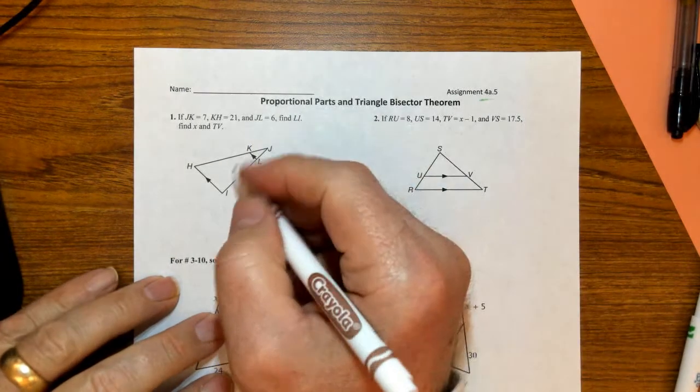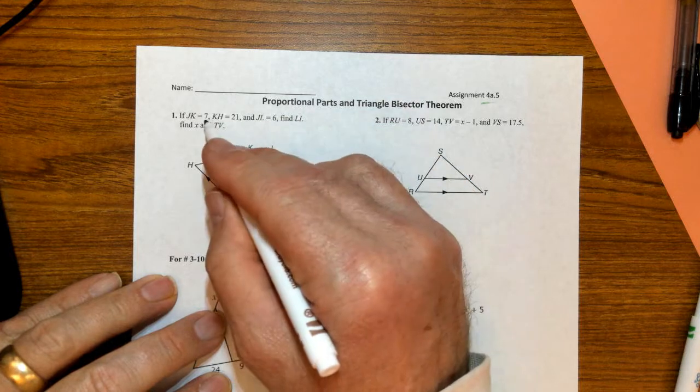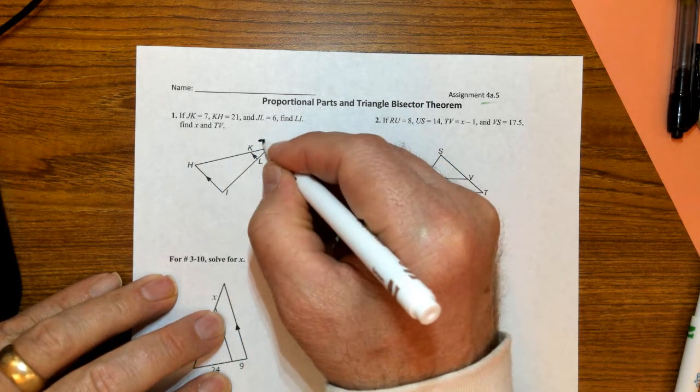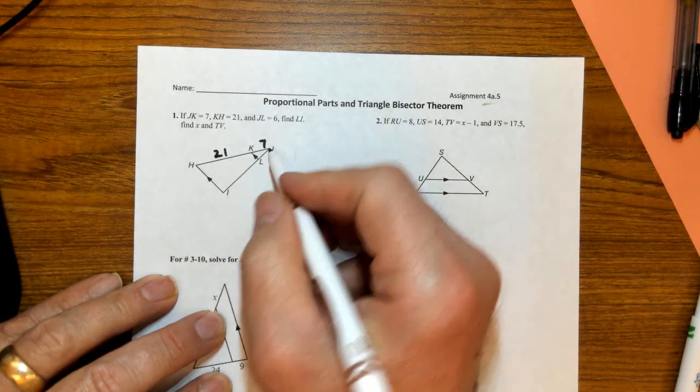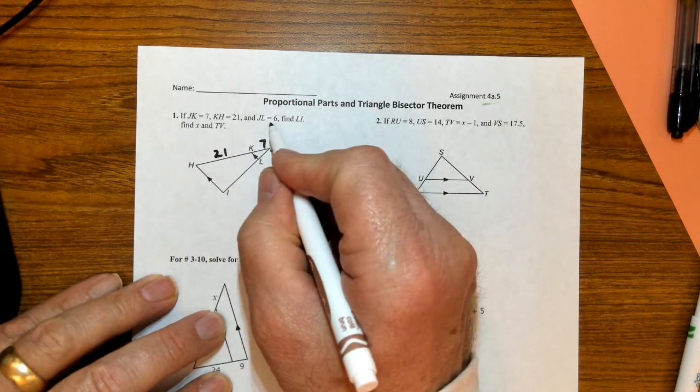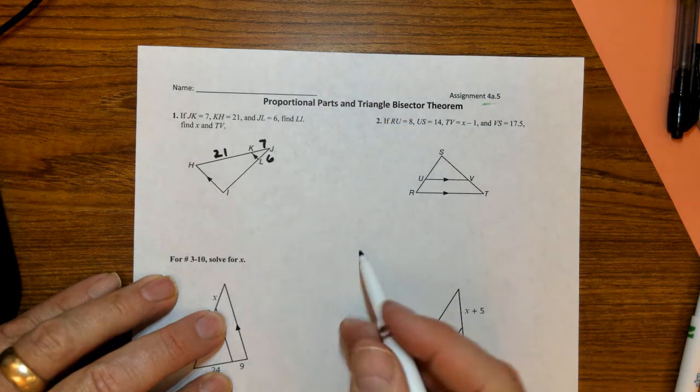So from the notes I know what these pieces are. JK is 7. That's this right here. KH right here is 21. I'm just putting in the numbers and I have JL equals 6. So they want us to find X.